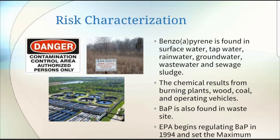There is no known industrial production or use of Benzo-A-Pyrene. Benzo-A-Pyrene can be found in surface water, tap water, rainwater, groundwater, wastewater, and sewage sludge. It may be released into the air, where sunlight turns the chemical into a dry form that falls to the ground and breaks down in the soil.